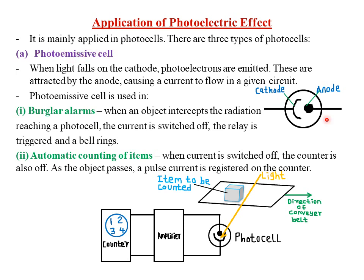Starting with the photoemissive cell: the circuit has a cathode, which produces photoelectrons whenever incident light of sufficient frequency falls on it, and an anode to attract the emitted photoelectrons. The terminals are connected to an external circuit. When light falls on the cathode, photoelectrons are emitted, attracted by the anode, causing a current to flow in the external circuit.